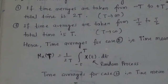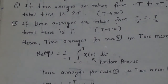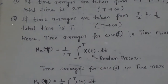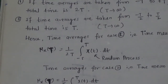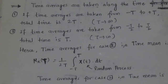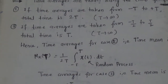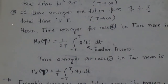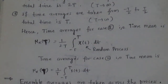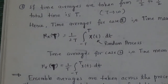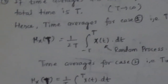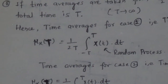In the second case, you can take the time averages along minus T/2 to T/2. Here the total time is T, and again this time T is approaching to infinity. For case 1, if you assume time averages are taken from minus T to plus T, then you have the formula for calculating the time averages as μx(T) = 1/(2T) · ∫ from −T to +T of x(t) dt,